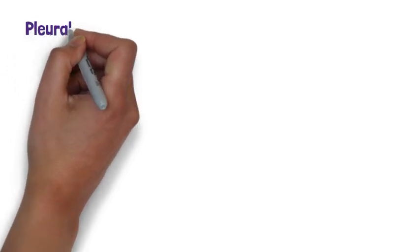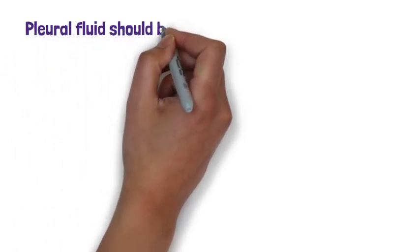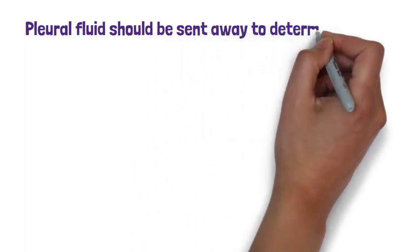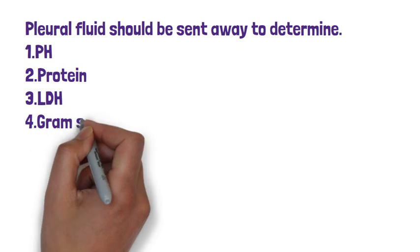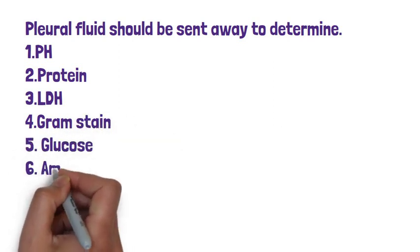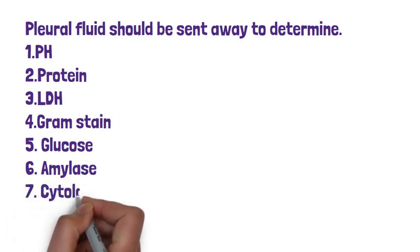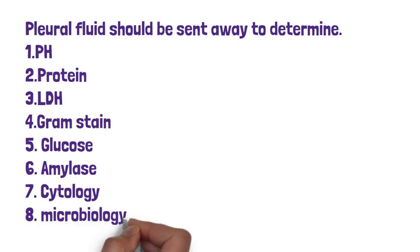In exams, you are often asked what is the fluid sent off for. This is a really common question and it comes up a lot in OSCEs as a question at the end of a station. So you would send the pleural effusion for a number of different things including pH, protein, LDH, gram stain, sometimes even glucose because a very low glucose level in the pleural effusion would suggest rheumatoid arthritis or some other conditions. And sometimes you would send it off for amylase if you're suspecting the pleural effusion to be pancreatitis. Also, you would send the pleural fluid to cytology and also for microbiology culture.